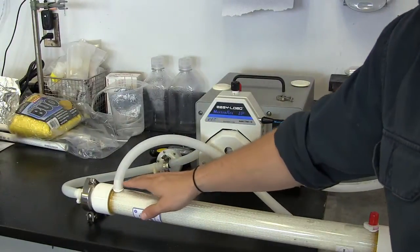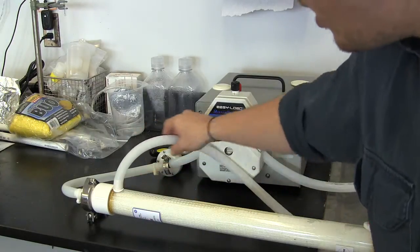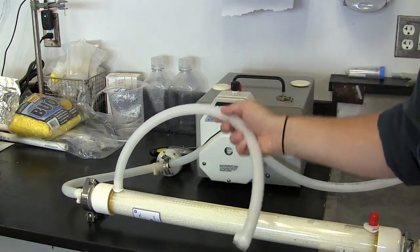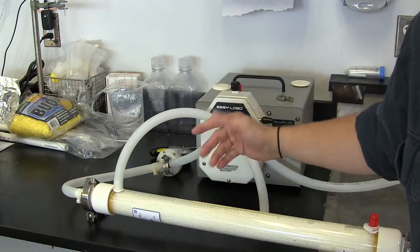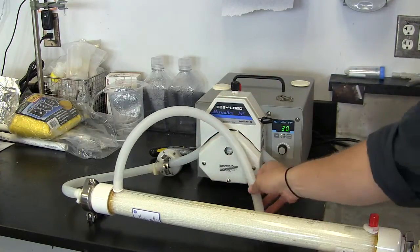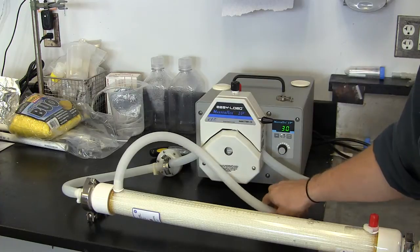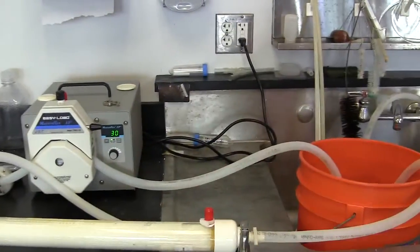Also, I have a hose attached here to one of these red nipples that then allows my filtrate to go back into a sink or into a vessel if I want to collect it. Nice clean water, 100 kilodalton filtered water comes out of here, so it's really nice clean water.